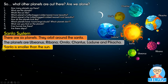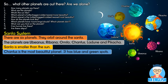For question three, we write: 'Santa is smaller than the Sun.' In my imagined system, the Santa star is smaller than our original Sun — we can write a sentence like that. Now look at questions 4 and 5. We use comparative and superlative adjectives: 'Santis is the most beautiful planet.' Our Santis is the most beautiful planet. It has blue and green spots.